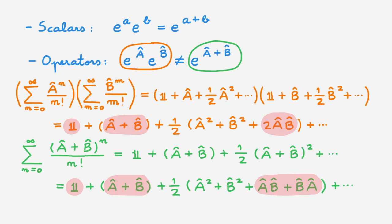These two terms are only the same if A and B commute, but we know that for operators A and B may not commute. This means that in general, the relation eᴬeᴮ = eᴬ⁺ᴮ for operators is an inequality.